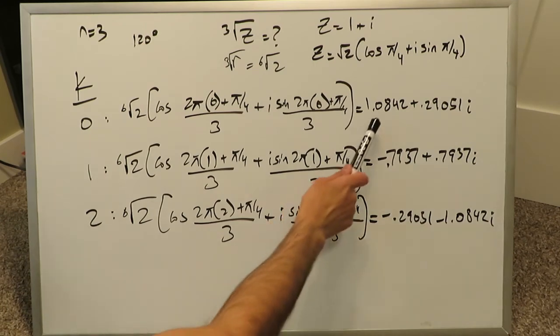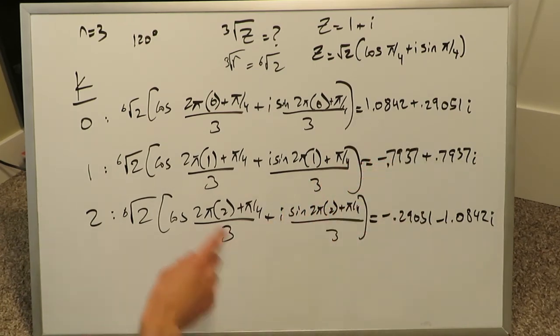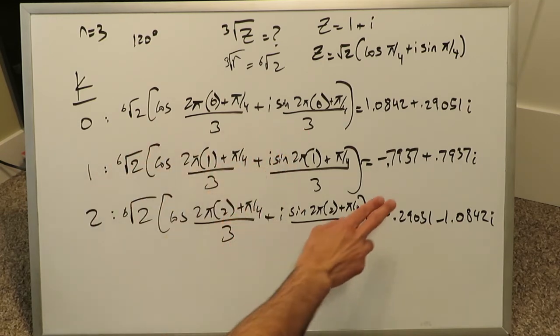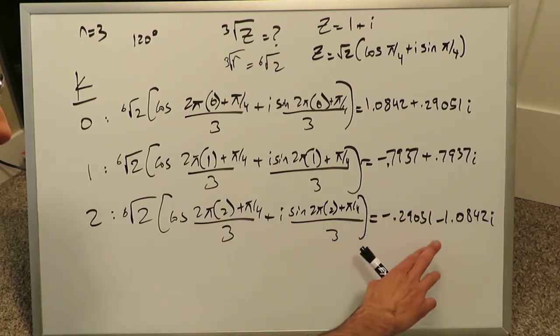I've done the computations and I've placed them over here. We have 1.0842 plus 0.29051i for the first root. For the second one, we have negative 0.7937 plus 0.7937i. For the third value, we have minus 0.29051 minus 1.0842i.